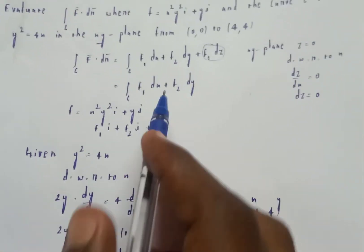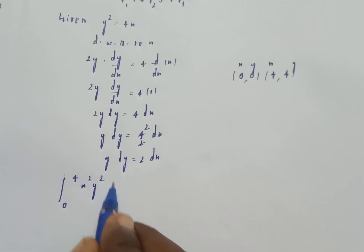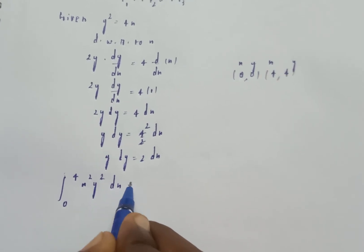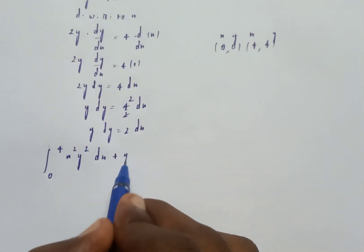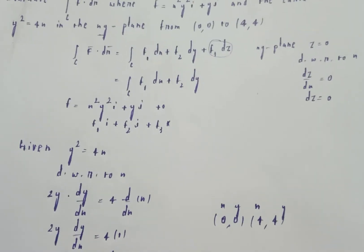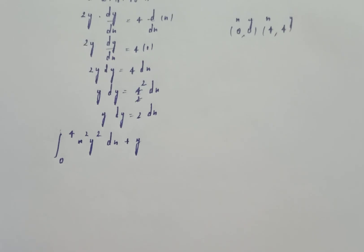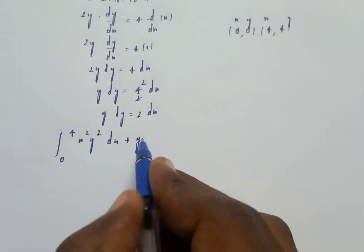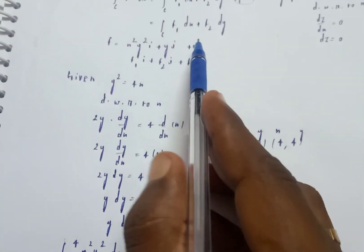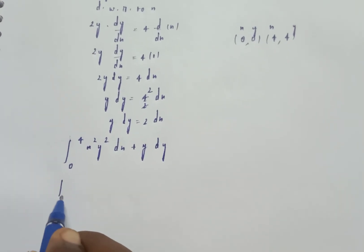Substituting into the integral: x squared y squared dx plus y dy. This gives f1 dx plus f2 dy with the appropriate substitutions from the curve.